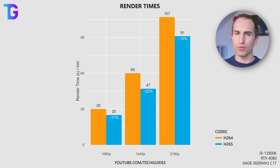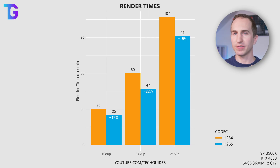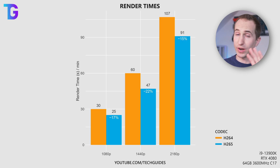But then again, if you have a beastly CPU like the 3900K with 32 threads, then going from that to rendering on your GPU isn't actually going to provide you with much of an improvement in render speeds. For my system, you can see the render times I'm getting for a sample one-minute clip without any edits, overlays, or effects on this graph right now.